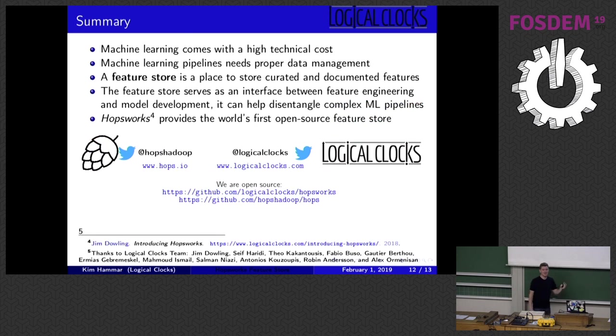And now my time is up. But if you're interested, I have several references on the final slide where you can read more. And just to summarize this presentation, machine learning is a very powerful tool, but it also comes with a very high technical cost. And in the beginning of this presentation, I mentioned this complexity of getting the data in the right format at the right time for doing machine learning. And our solution to this problem is to invest in a data management layer specifically designed for machine learning called a feature store. And the world's first open source feature store is available on our platform called HopsWorks. Thank you.